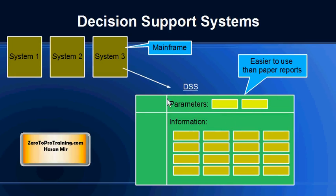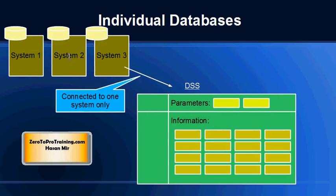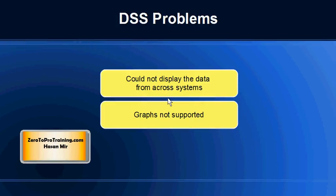An important point is that a Decision Support System would display data only for a particular system. A receivables department DSS would only display receivable invoices sent to customers — it would not display the sales order that resulted in that invoice. For that, you'd need to connect to the sales department's DSS, which was not very convenient. Each system was connected to its own database, and to see information from another system you had to connect to its own DSS.